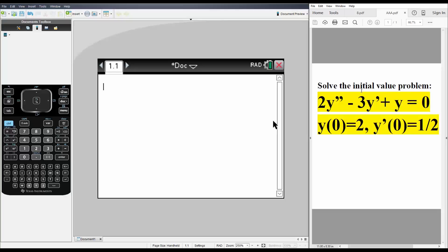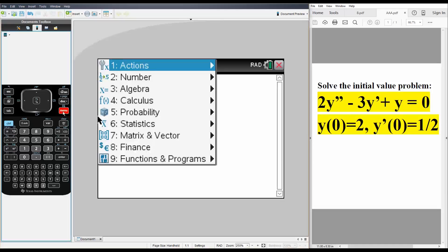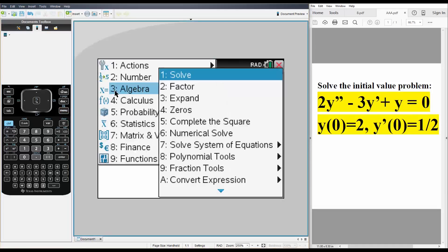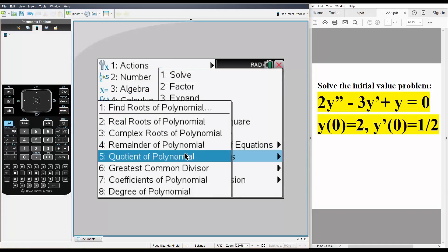Okay in this video we want to solve the initial value problem 2y double prime minus 3y prime plus y is equal to zero where y(0) is equal to 2 and y prime zero is equal to 1/2. We'll solve this question using the TI. First thing we hit menu, algebra, polynomial tools.